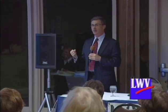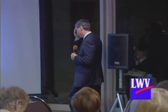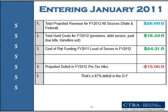Entering January of this year, the state had to put together a budget for fiscal year 2012. Revenue from all sources was expected at 26 billion dollars. But hard costs before they could fund one penny on public services were 18 billion — that's debt service, pension obligations, and over six billion dollars in past due bills left over from the prior fiscal year. The budget in 2011 for public services was 24 billion. You add 24 to 18, you come up with 42 billion — only 26 billion in revenue. That's a 15.9 billion dollar deficit. All of which falls in the general fund for services.